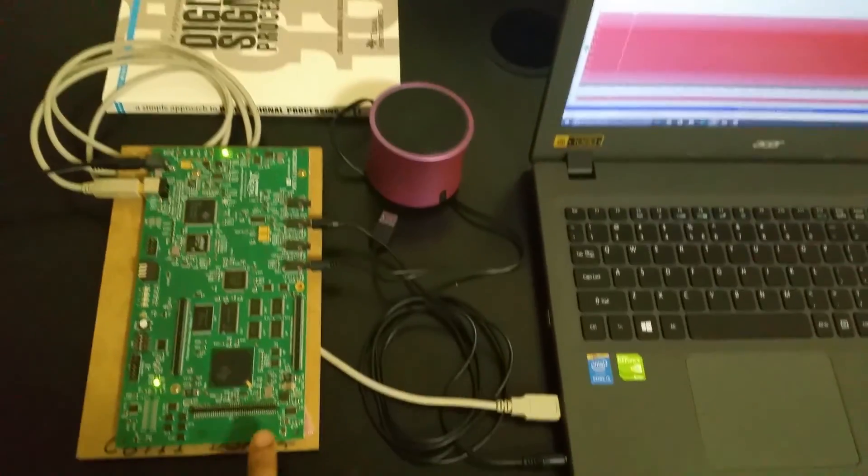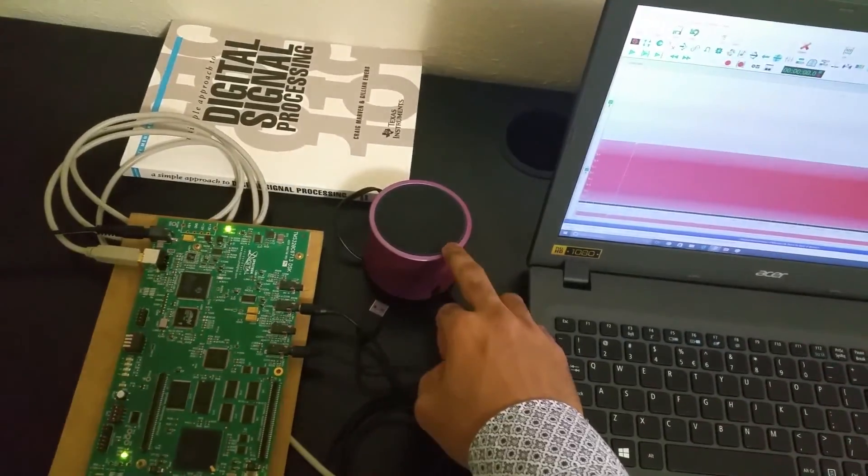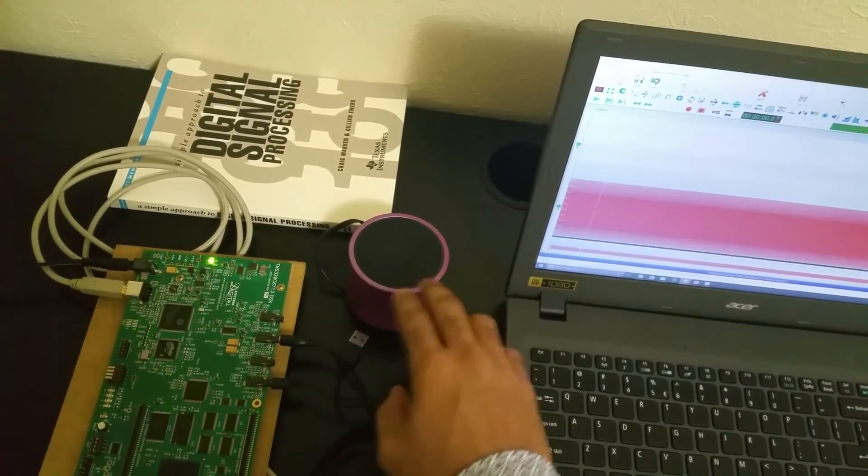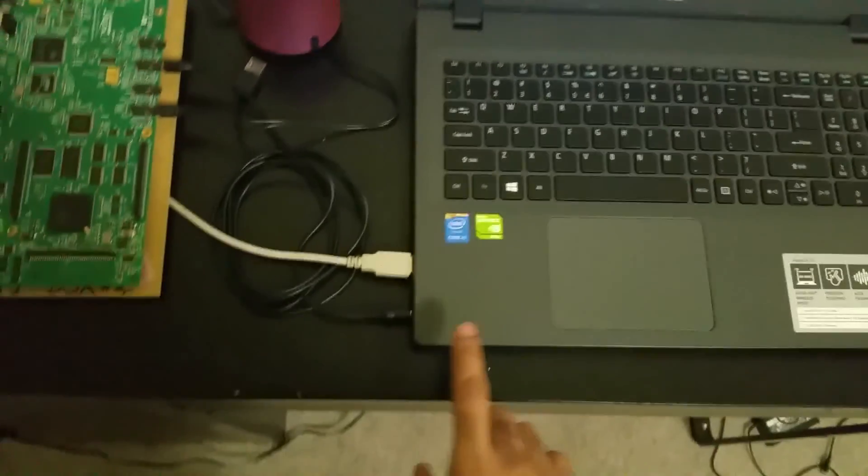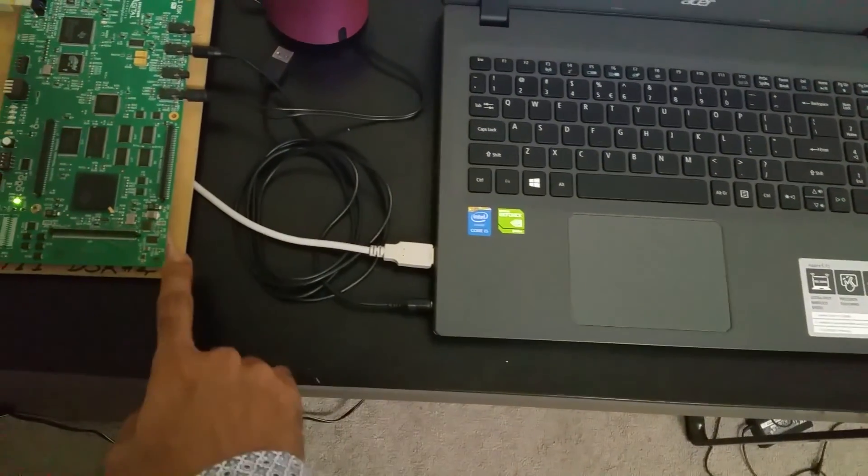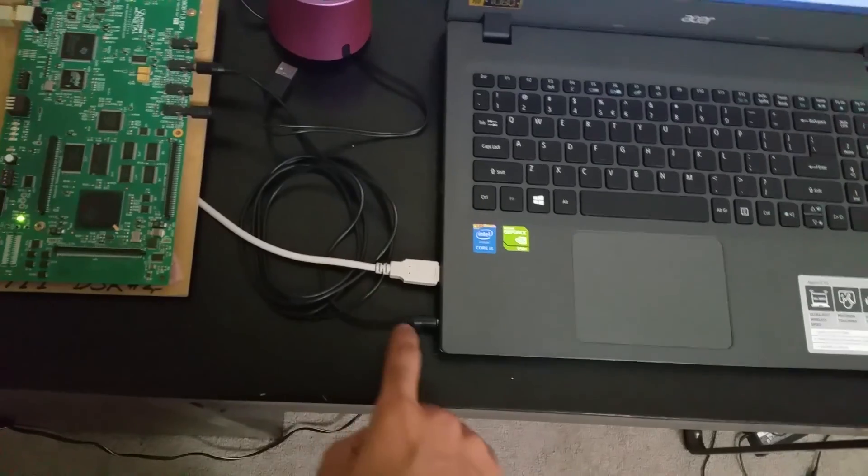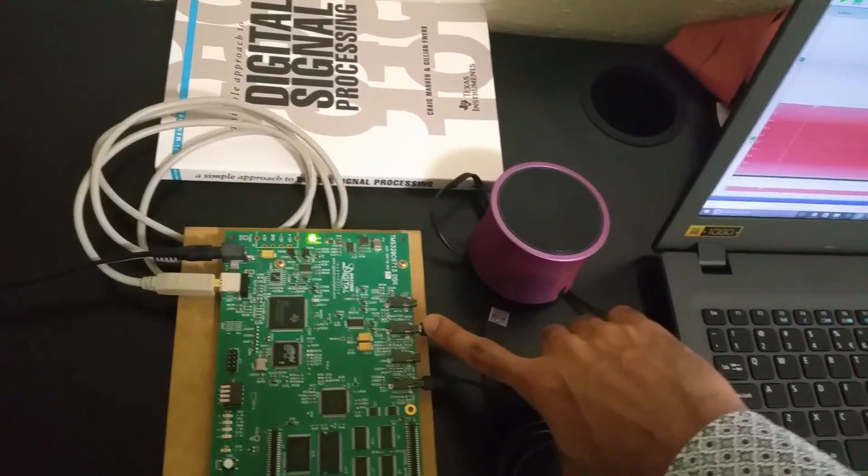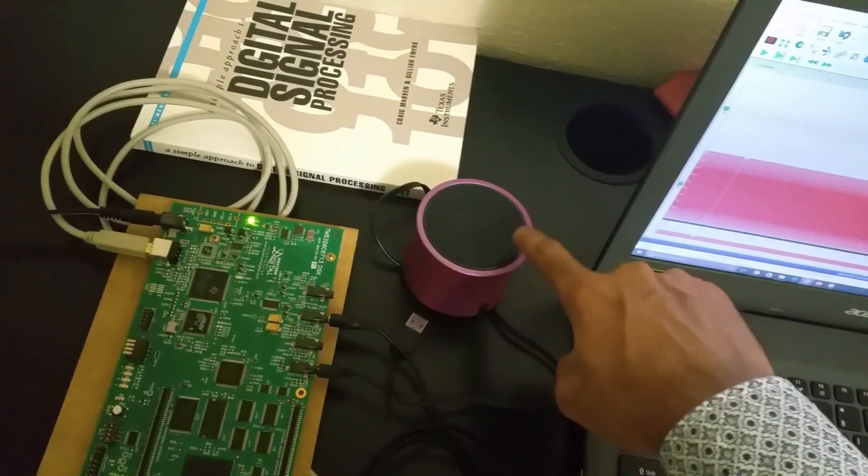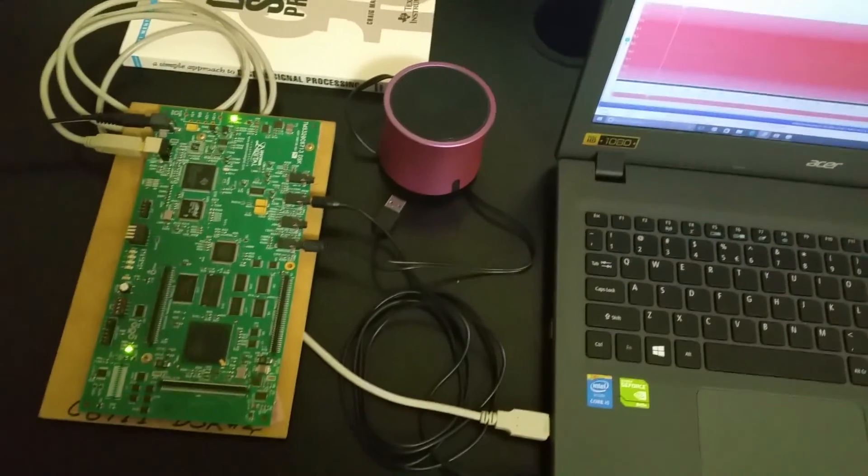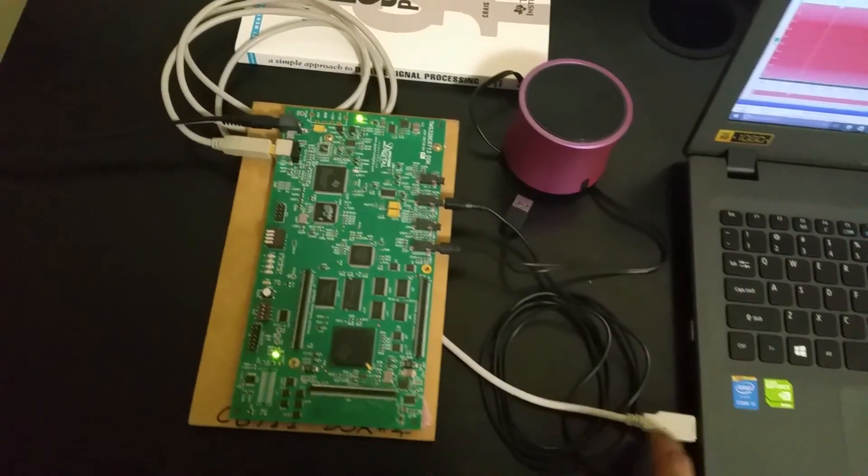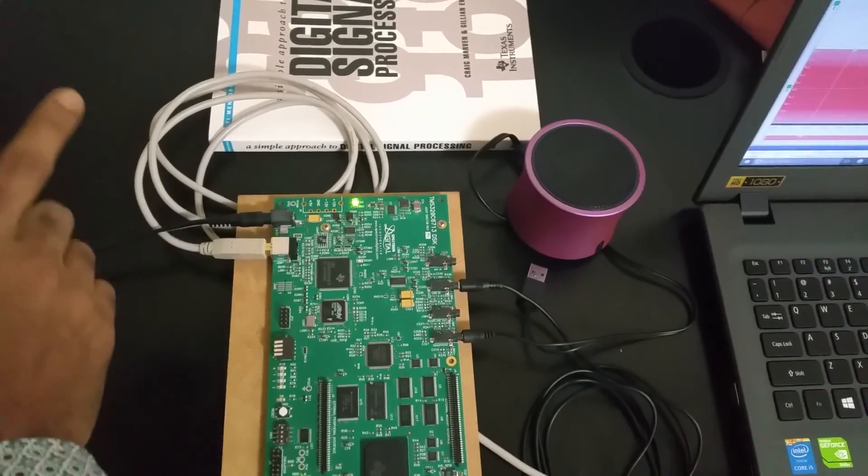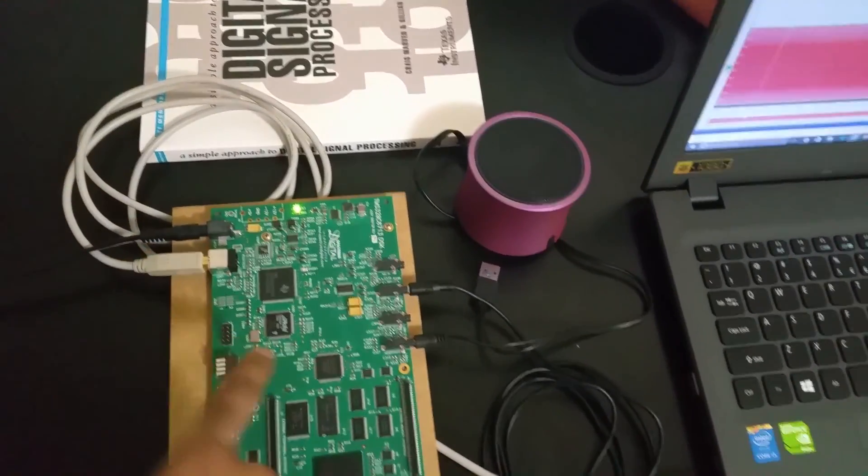Here is the DSK board and here is the speaker from which we will hear the output. We are feeding DSK board with this AUX cable; it's going to the input channel and this channel is going to the speaker. And this is a USB cable, and through this USB cable we are dumping the code into the DSK board.